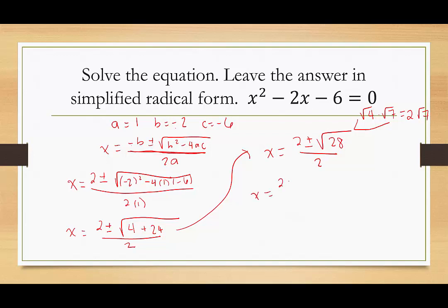So we would say x equals 2 plus or minus 2 radical 7, over 2. Each term — the 2 by itself, the 2 radical 7, and the other 2 in the denominator — are all divisible by 2, so we divide each one by 2. That gives us 1 plus or minus the square root of 7 over 1, and we can ignore that denominator. So we end up with two solutions: x equals 1 minus the square root of 7, and x equals 1 plus the square root of 7.